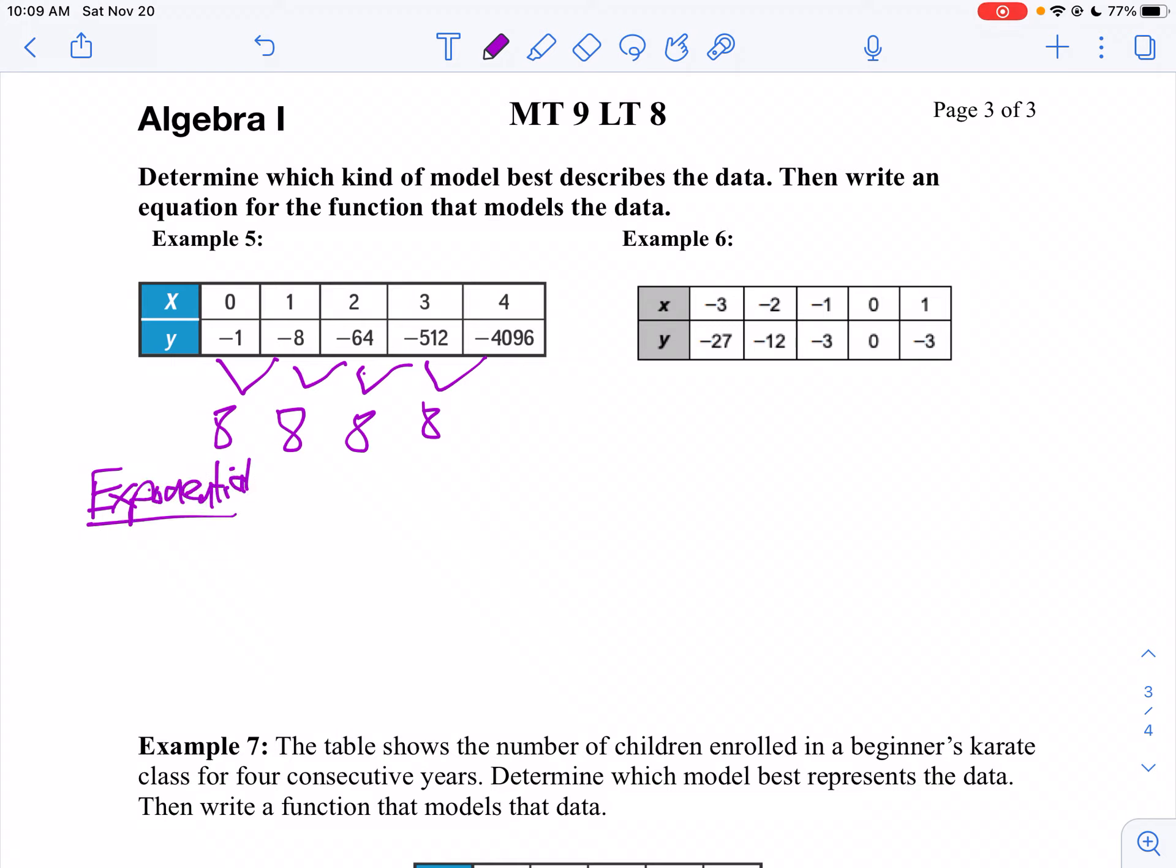Exponential follows the form y equals a times b to the x power. What I'm going to do is replace x and y and solve for a, because I know b is 8. That's what we're multiplying by each time. And I don't suggest you use 0 because weird things happen with 0.